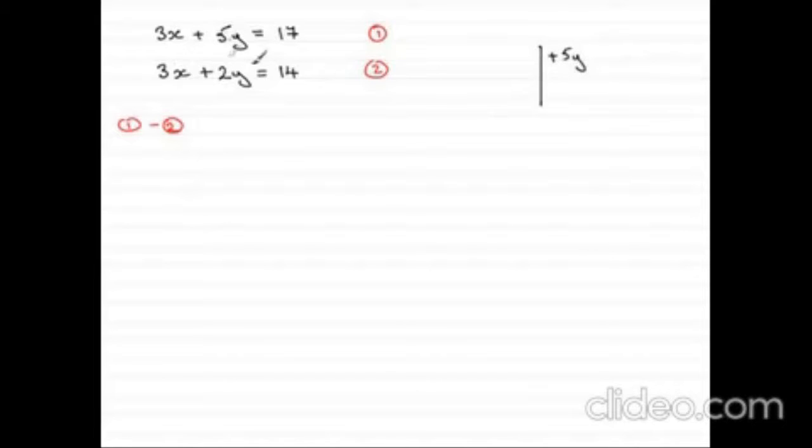So we subtract here, 5y minus 2y. This plus 2y is changed into minus 2y when we subtract. Minus into plus is minus 2y. Therefore, 5y minus 2y is 3y. Let's write it here.